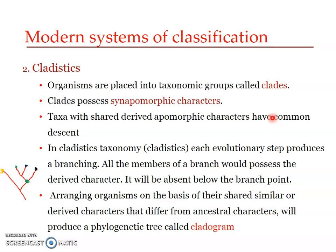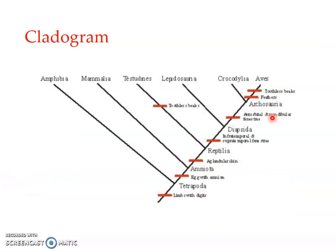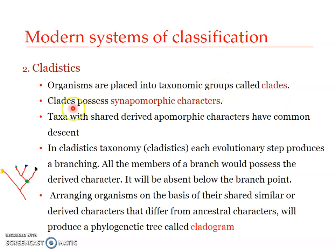Coming back to cladistics: organisms are studied based upon their characters, especially based upon their common ancestry, and based on those characters, the organisms are placed into certain groups known as a clade. Archosauria is an ancestral stock, and from there two taxa arose — one is Aves and the other is Crocodilia. These two taxa along with the ancestor are what is referred to as a clade. Since these two groups arose from the same ancestor, this forms a monophyletic group.